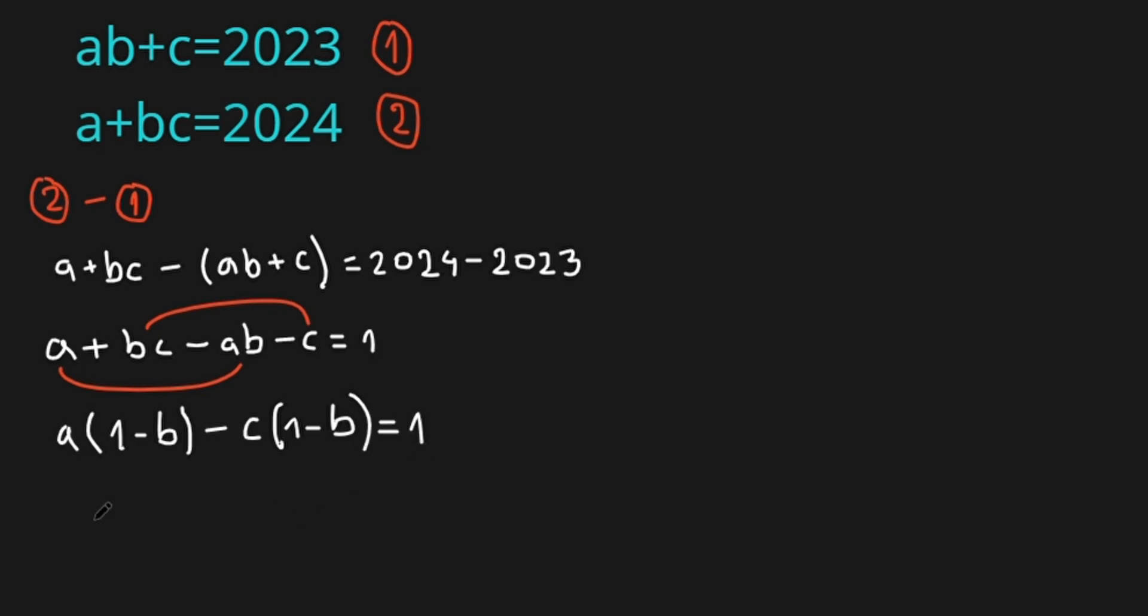So 1 minus B is a common factor here and we can take it out. 1 minus B, and then times brackets A minus C. All this equals 1.